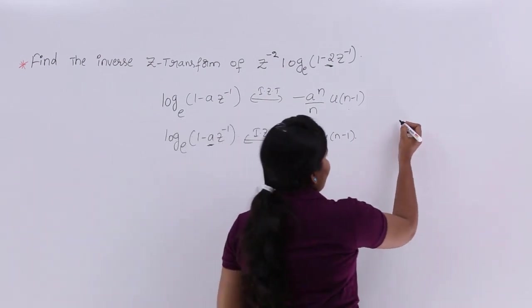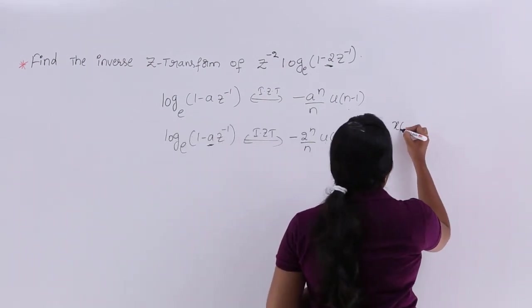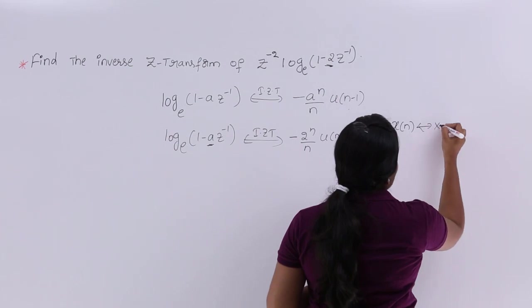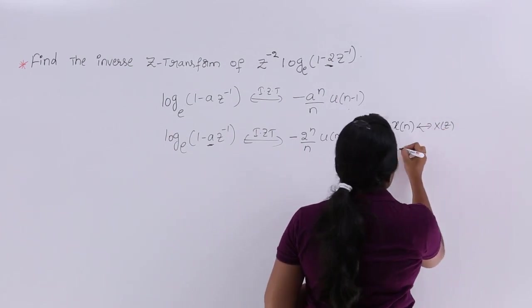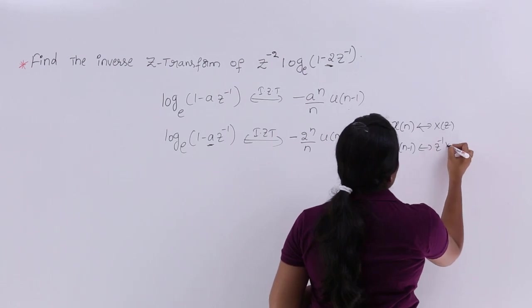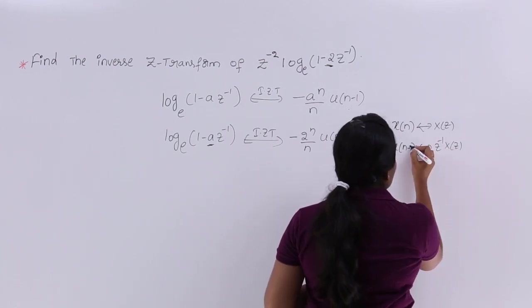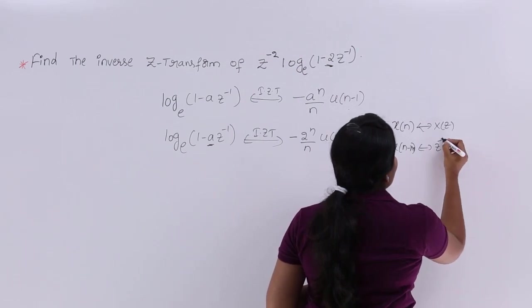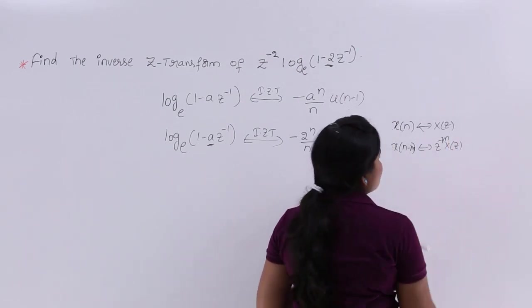If x(n) has Z-transform X(Z), then x(n-1) has Z-transform Z^(-1) * X(Z). Or more generally, if you have a shift of n-M, you get Z^(-M) * X(Z).